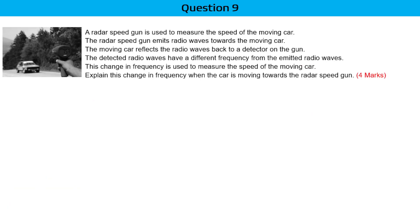Question 9. A radar speed gun is used to measure the speed of a moving car — you might have seen this in movies like Need for Speed. The radar speed gun emits radio waves towards the moving car, and the moving car reflects all the waves back. The detected radio waves have a different frequency from the emitted radio waves, and this change in frequency is used to measure the speed of the moving car.